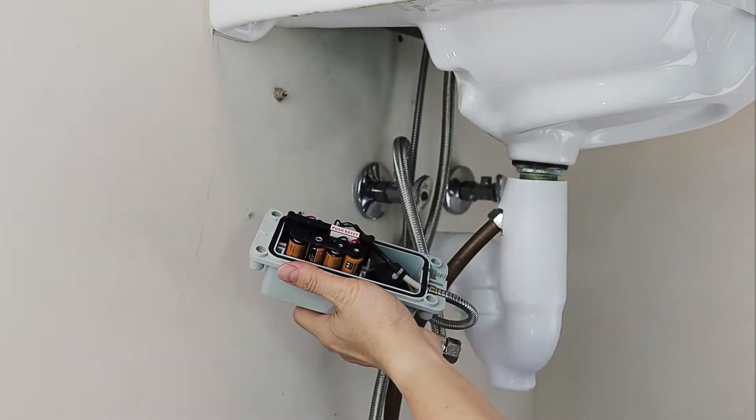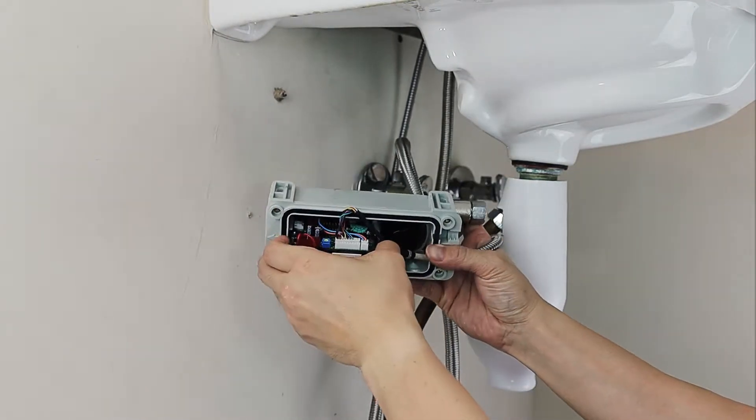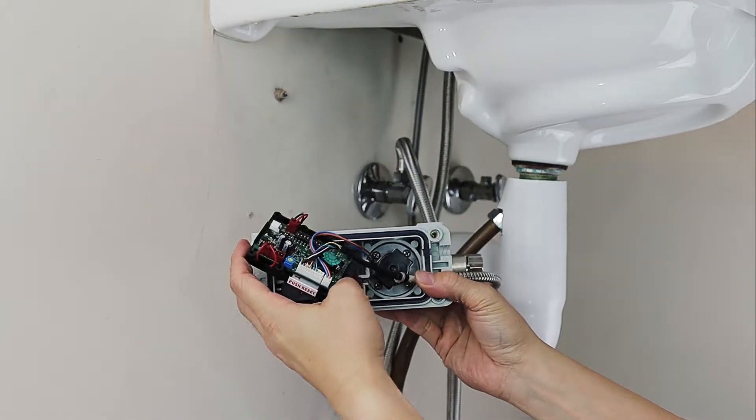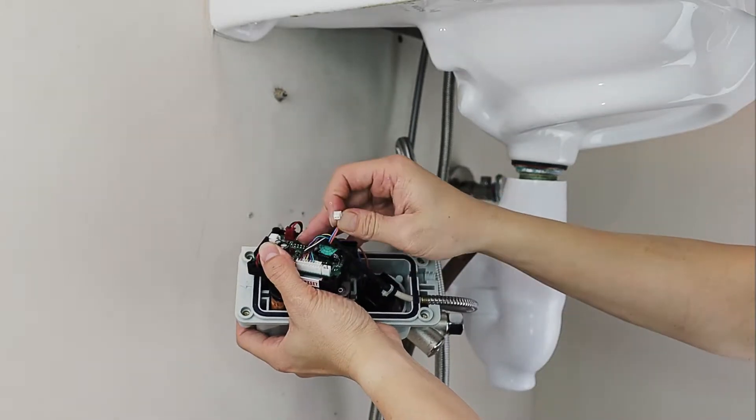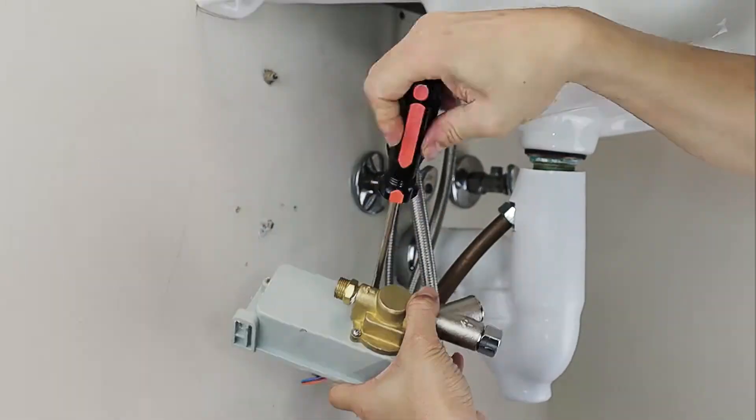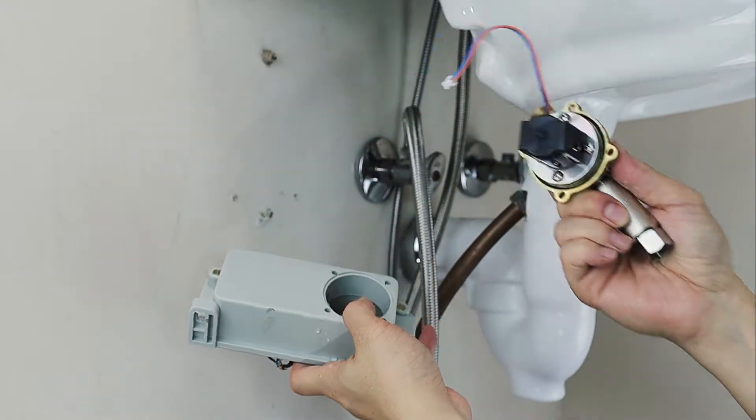Using the 3mm Allen wrench, remove the control box cover. Slide the control module out and disconnect the solenoid valve connector harness. Remove the solenoid valve assembly from the control box. Set the control box aside.